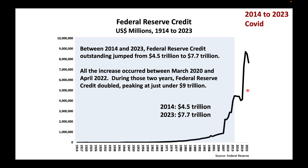Between 1914 and 2023, Federal Reserve Credit outstanding jumped from $4.5 trillion to $7.7 trillion. All of the increase occurred between March 2020 and April 2022. During those two years, Federal Reserve Credit doubled, peaking at just under $9 trillion.